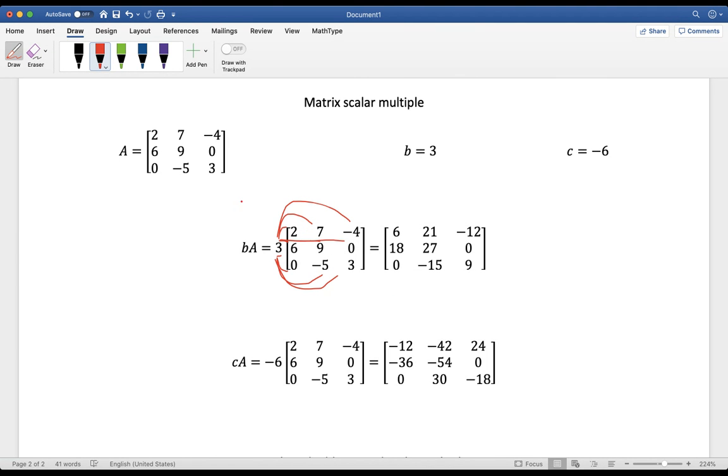Watch your minus signs. If I take that matrix A and I multiply it by a negative six, then it's also going to change the sign. As I multiply six times two, and six is negative, gives me a negative 12. Negative six times seven is a negative 42. Negative six times negative four is positive 24, and so forth. So scalar multiple is very simple.